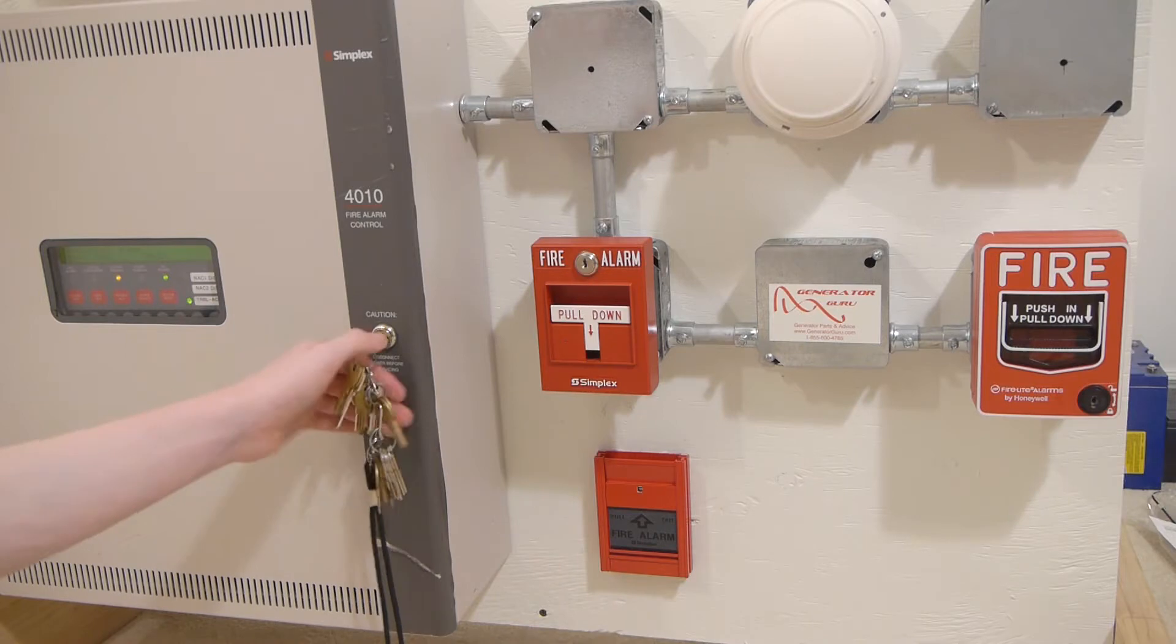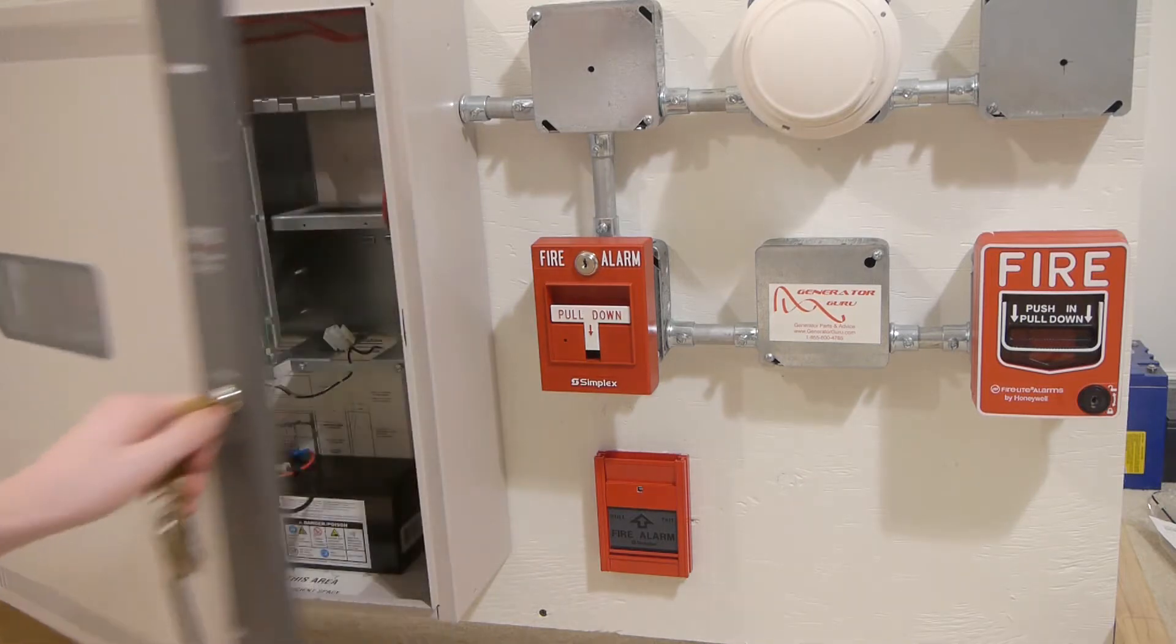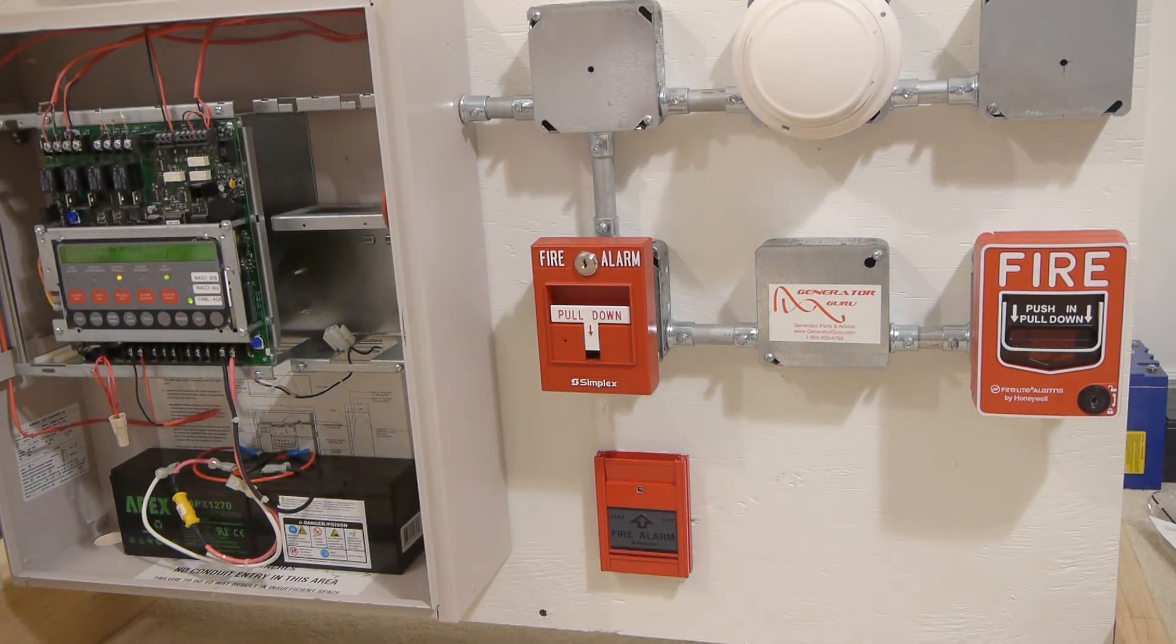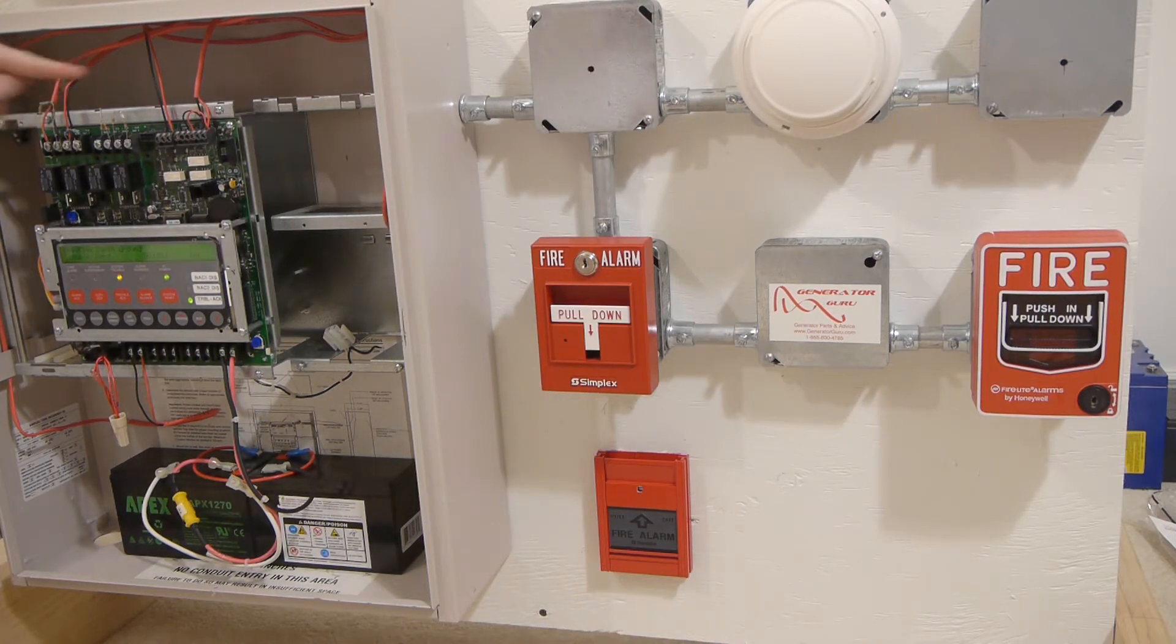Now I know this is on the SLC circuit of the panel, but if you don't know if it's on the SLC, NAC, or any other circuit, you basically just take the positive or negative wire off of each circuit depending on if it's negative or positive earth ground fault until the ground fault goes away.